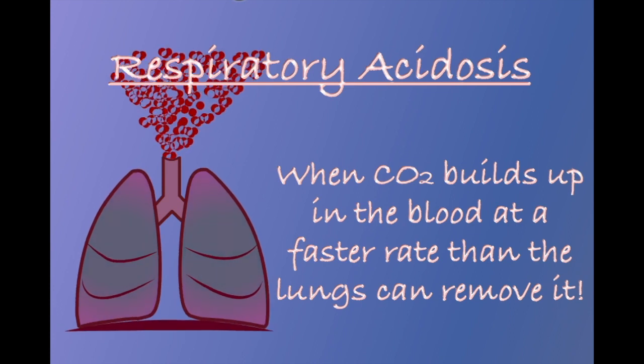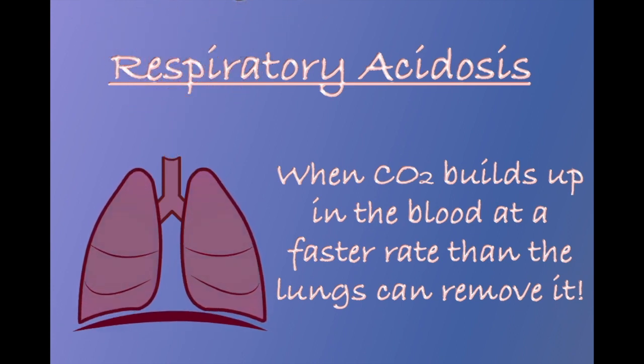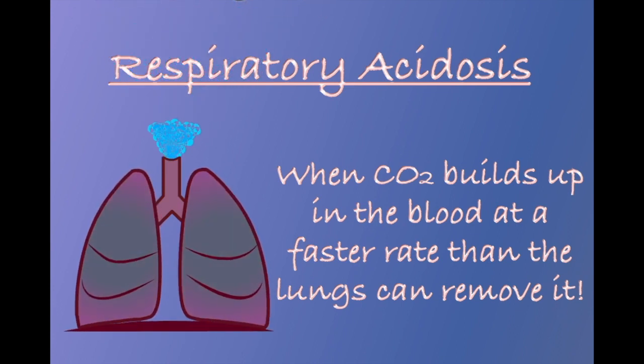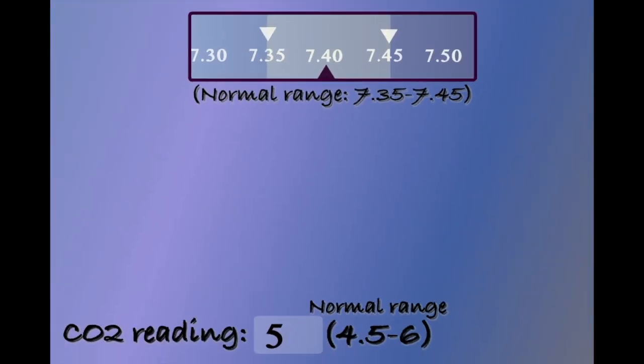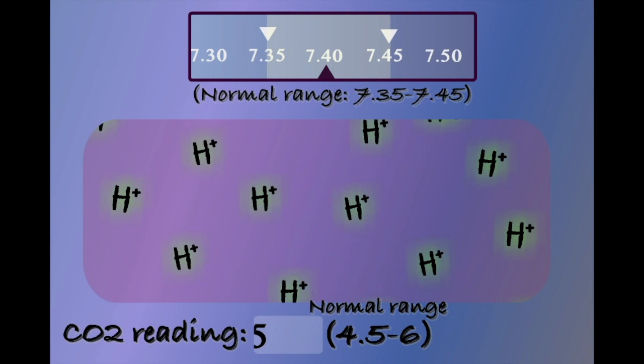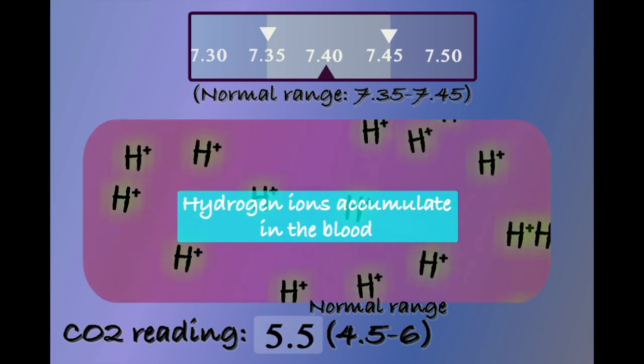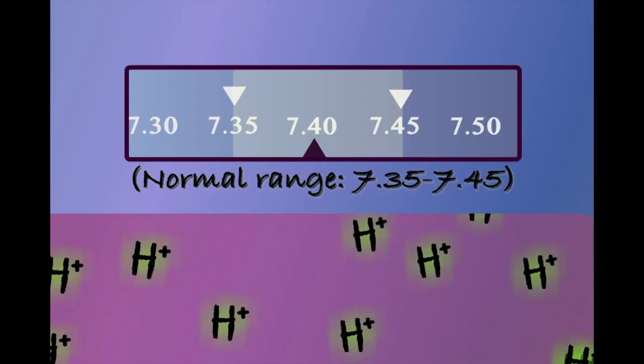Respiratory acidosis occurs when CO2 builds up in the lungs at a faster rate than our lungs are removing it. For example, when a respiratory effort is suppressed after a head injury. As carbon dioxide begins to accumulate within the bloodstream, the concentration of hydrogen ions in the blood will begin to increase, and the pH of our blood will begin to be pushed downwards.